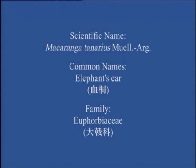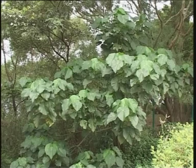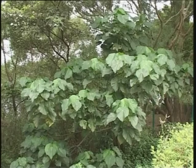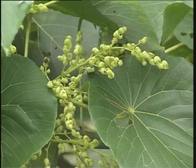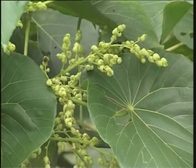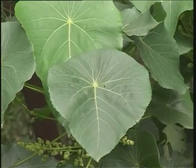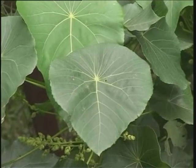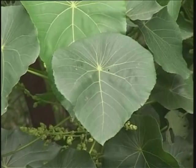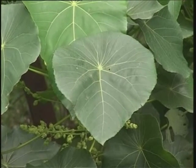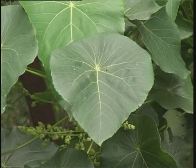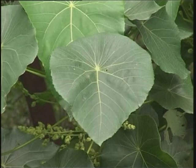Elephant's Ear, also known as huet thong, is an evergreen tree growing to a height of about 5 meters, with the leaves generally crowded at the ends of the branches. April is the flowering season of this plant. The leaves are large, simple, more or less heart-shaped in contour. The leaf stalk is long and attached in such a way that the entire leaf is shield-shaped, with conspicuous veins originating on the leaf surface at the point of attachment of the leaf stalk. The leaves generally resemble elephant's ears, and hence the English common name.